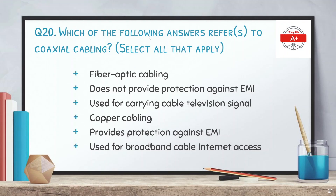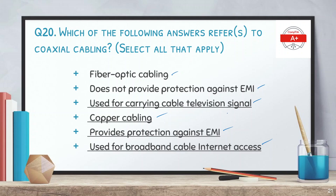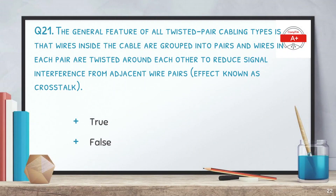Question 20: which of the following answers refers to coaxial cabling? Select all correct options. Options include fiber optic cabling, does not provide protection against EMI, used for carrying cable television signal, copper cabling, provides protection against EMI, and used for broadband cable internet access. The correct answers are: used for carrying cable television signals, it is copper cabling, it provides protection against EMI, and it is used for broadband cable internet access.